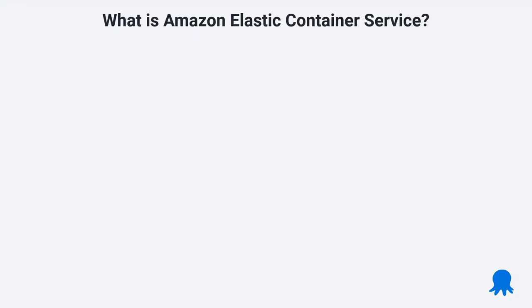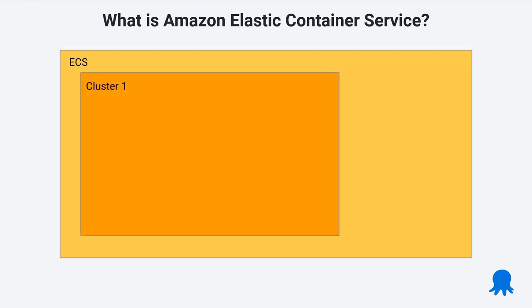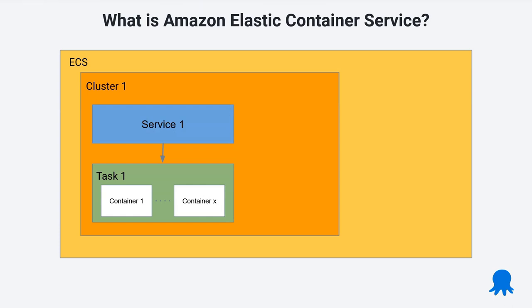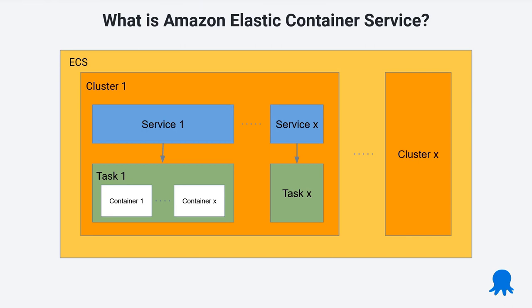Some terms you'll see as we go through: ECS as a service contains clusters - a way to group an application together. Within a cluster we have a service, and that service's responsibility is to stand up a task which contains our containers. The service just makes sure it can find the task, and if it can't, it spins it up. The task itself houses our containers and the infrastructure within it. We can have more than one container within a task, and more than one service and task too - this is how we'd split up a microservice-based infrastructure.